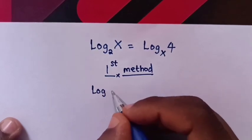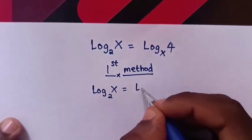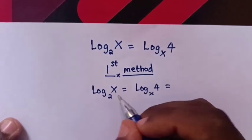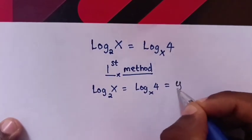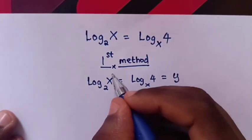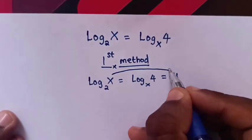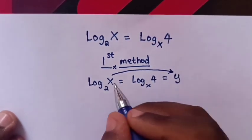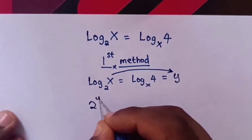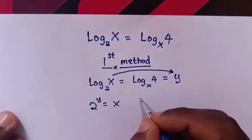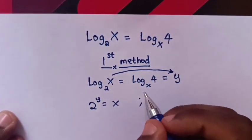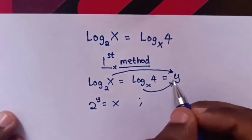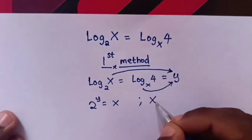From log x base 2 equals log 4 base x, let both sides equal y. Comparing log x base 2 equals y gives us 2 to the power y equals x. And comparing log 4 base x equals y gives us x to the power y equals 4.